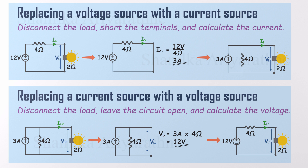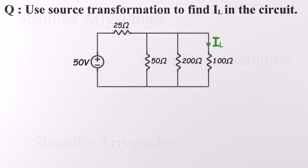But here's the golden rule: only use source transformation when it actually helps simplify the circuit. Sometimes it makes things cleaner; other times, not so much. Next, let's apply source transformation to a real circuit. Here's the problem: we need to find IL, the current through a 100 ohm resistor. During our transformation steps, we'll leave that resistor untouched, since it's our load.